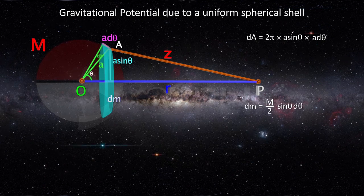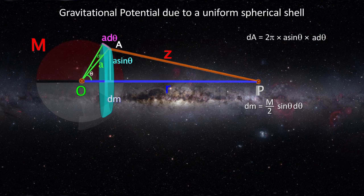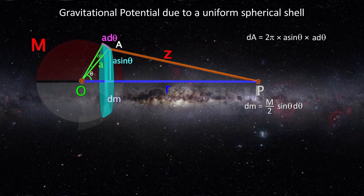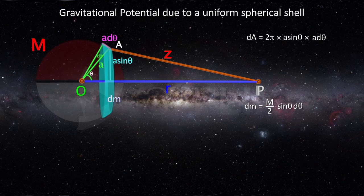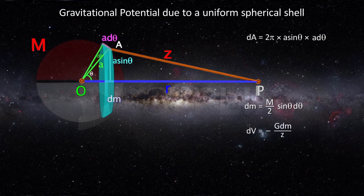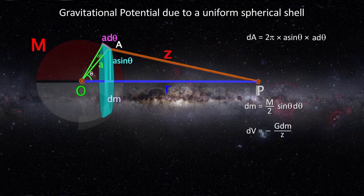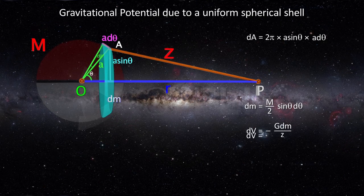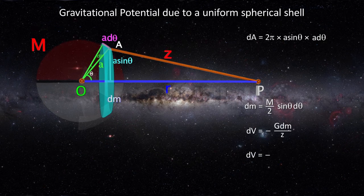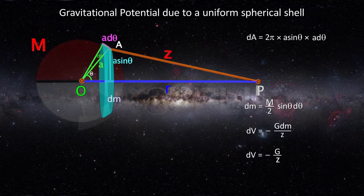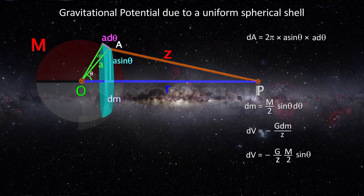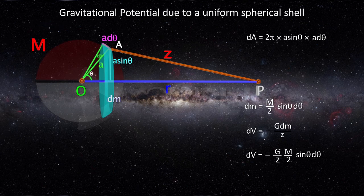The gravitational potential at P due to this ring element is minus G dm by z. So, dV equals minus G by z times m by 2 times sin theta d theta.